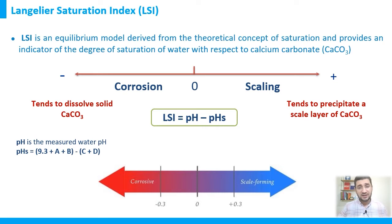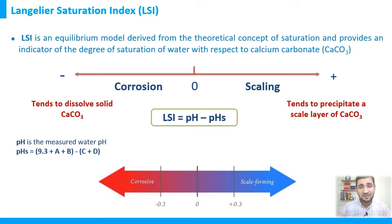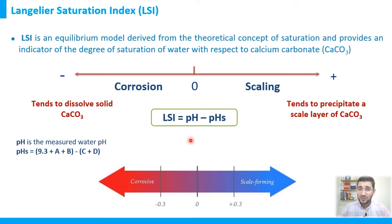On the other side, when we have negative LSI values — minus 0.1, minus 0.5, minus 1, minus 2, minus 3, and so on — the solution is under-saturated and can still dissolve more calcium carbonate. There is no scaling tendency, but there may be a corrosion tendency. The question is: how do we calculate LSI? LSI equals pH minus pHs.